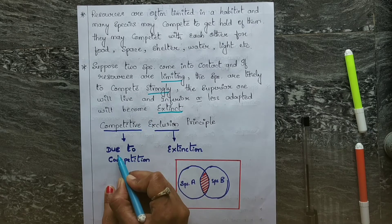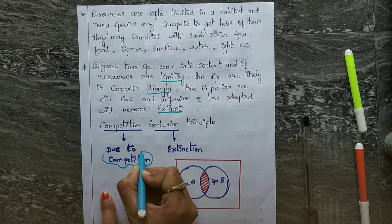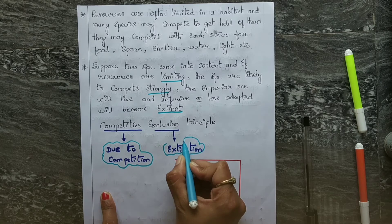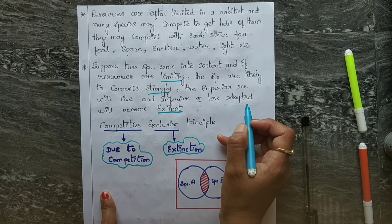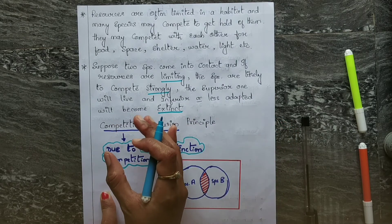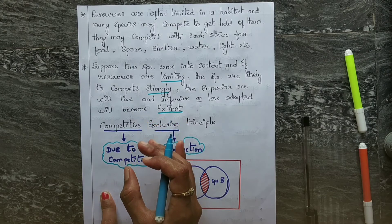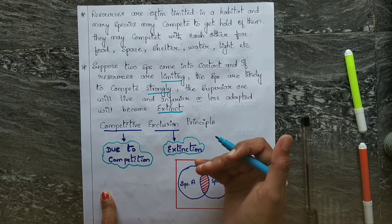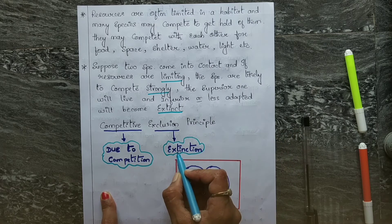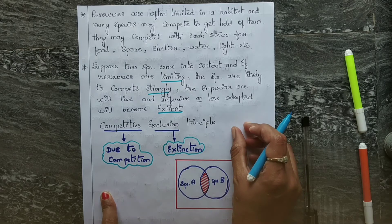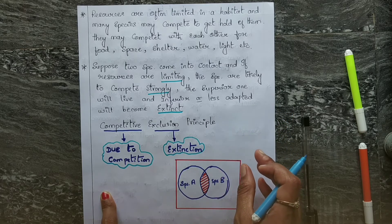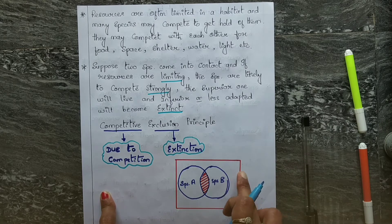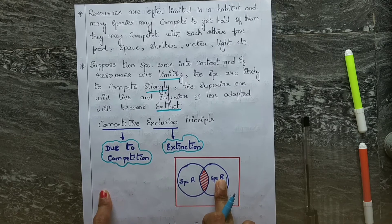Competition means it is due to competition. Exclusion means extinction. Due to strong competition, the superior one will survive, the species which is more capable, more adaptable will survive. And the species which is inferior, less adaptable, will become extinct. Because the resources are very limited and they have to live in the same area, that's the reason the species will get extinct.